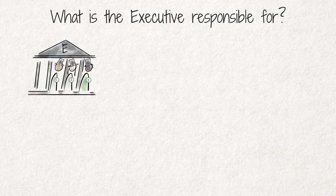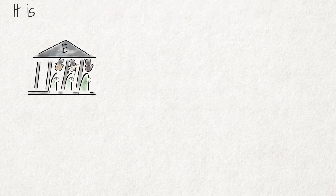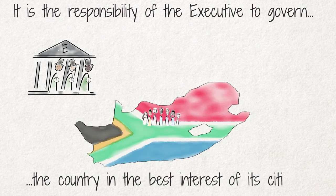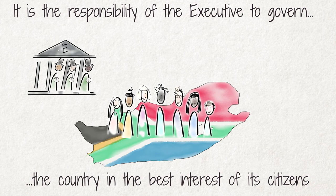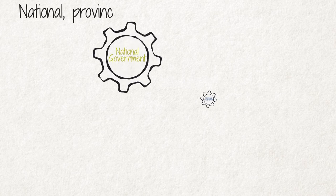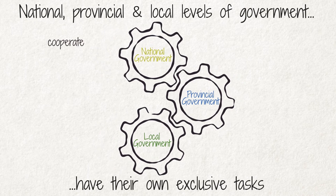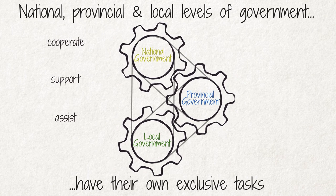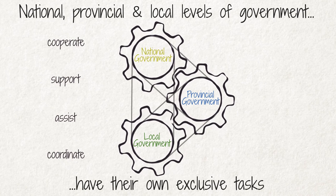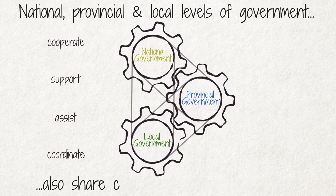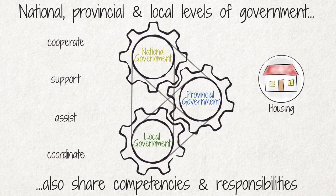Now let's talk about what the executive is responsible for and its tasks. It is the responsibility of the executive to govern the country in the best interests of its citizens and in compliance with the constitution. The executives at the national, provincial, and local levels of government have their own exclusive tasks, but must cooperate, support, and assist each other and coordinate their actions and legislation. For some functional areas, they also share competencies and responsibilities — for example, housing.